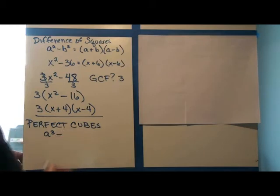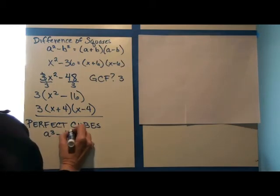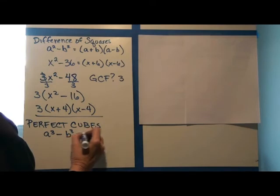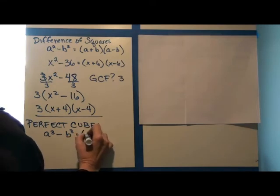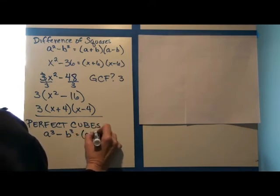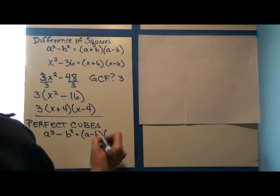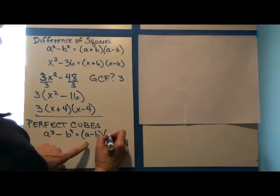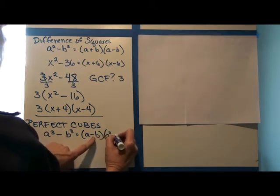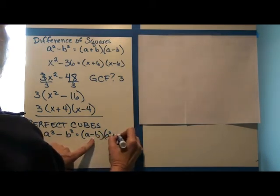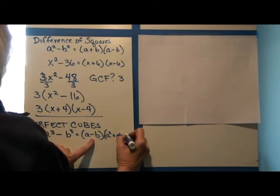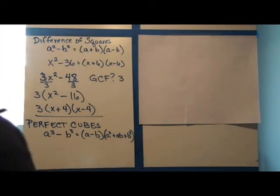First of all, if you have a perfect cube minus a perfect cube, this is actually factored by the cube root minus the cube root times, ignore this now, the square of that number, change the sign, multiply the numbers together, add the square of the last number.